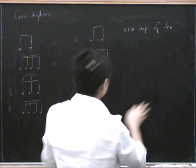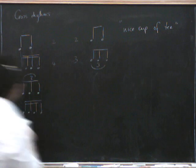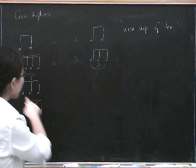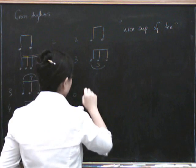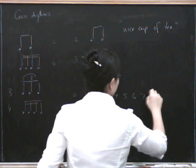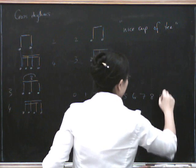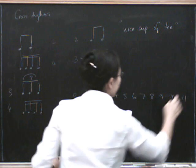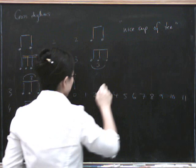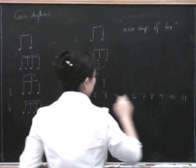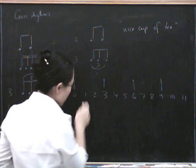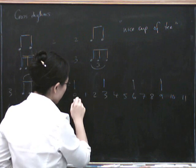So how do we work this out? We take the lowest common multiple of 3 and 4, which is 12. So we write out every number mod 12: 0, 1, 2, 3, 4, 5, 6, 7, 8, 9, 10, 11. Then we find everything that's zero mod 3.